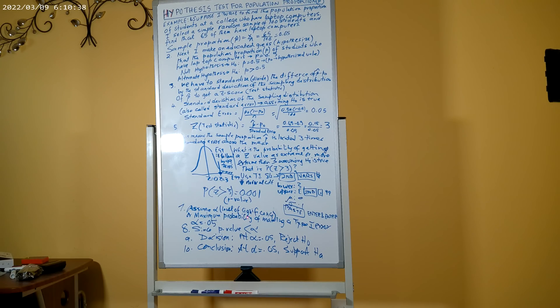Of this area, or alpha, as 0.05. Now our calculated p-value of probability of z greater than 3 is less than alpha 0.05. So our decision is: at alpha = 0.05, there is a reason we reject H₀ because p is less than alpha. Conclusion: at alpha = 0.05, we have enough evidence to support the alternate that p is greater than 0.5, or more than 50% of the students have laptop computers.